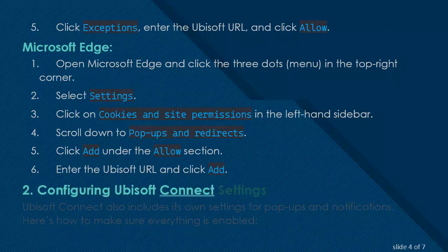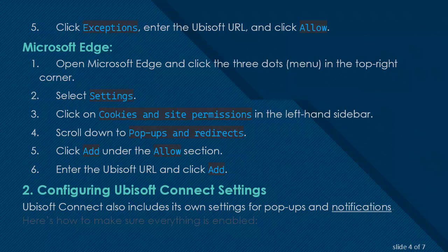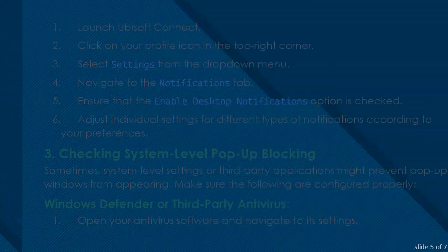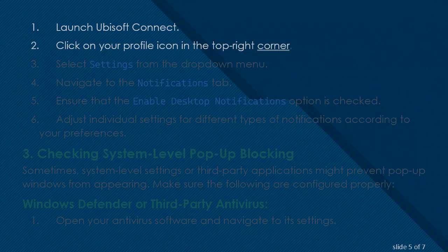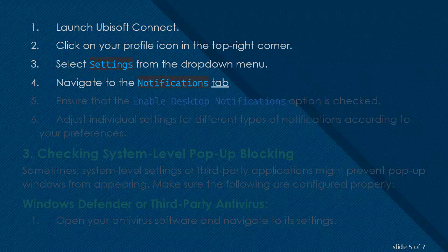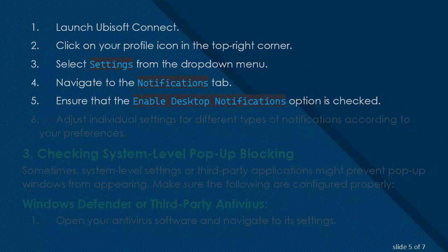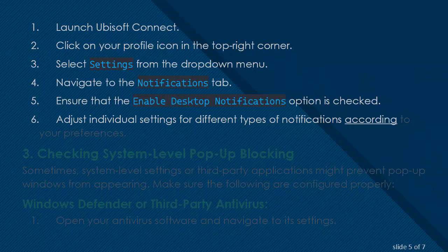Configuring Ubisoft Connect Settings: Ubisoft Connect also includes its own settings for pop-ups and notifications. Here's how to make sure everything is enabled. Launch Ubisoft Connect and click on your profile icon in the top right corner. Select Settings from the drop-down menu. Navigate to the Notifications tab and ensure that the Enable Desktop Notifications option is checked. Adjust individual settings for different types of notifications according to your preferences.